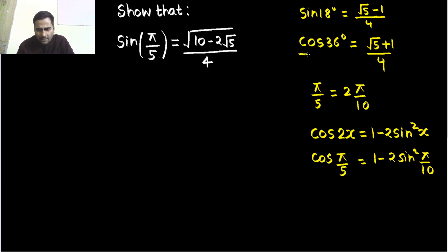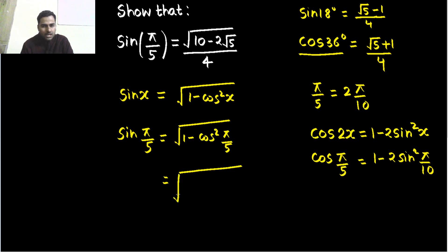Because we already know the value of cos 36 degrees, we can use this result that sin x is √(1 - cos²x). So if I want sin(π/5) value, if I want, just plug in the value cos(π/5) value. This is π/5 only, 36 is π/5, 180 divided by 5 is 36.